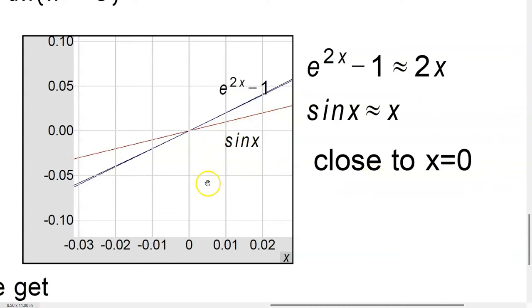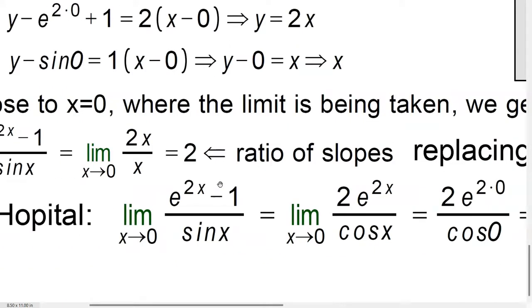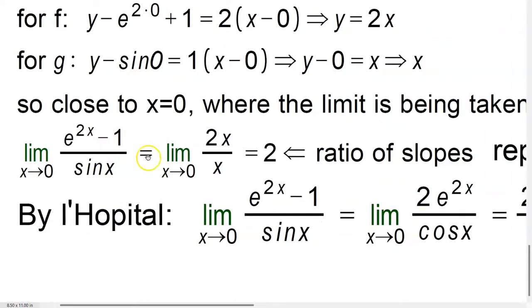So why is this relevant? Well, because that means that the behavior of the functions e to the 2x minus 1 over sine x would be the same as the behavior of 2x over x. Because we've linearized, and you see that over here, they're about the same. So the limit as x approaches 0 of e to the 2x minus 1 over sine x would be the same as the limit as x approaches 0 of 2x over x, which is then just 2.